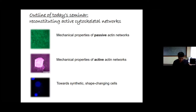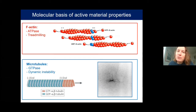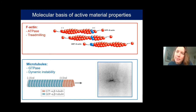There is one question about actin's chiral properties. Recently people have looked into chirality because there is evidence of chiral flows in embryos, and this has triggered work on the origin of those chiral flows, which may have to do with the chirality of actin and its interactions with actin-binding proteins. But this is still work in progress.